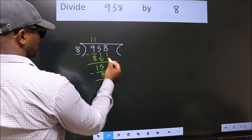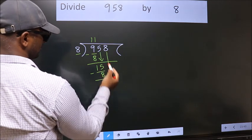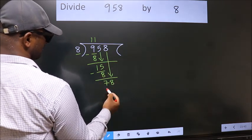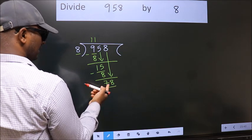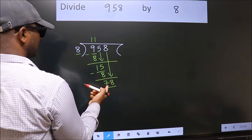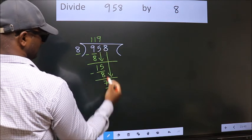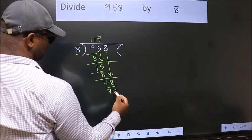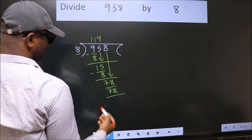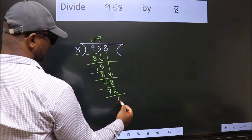After this bring down the beside number. So 8 down. So 78. A number close to 78 in 8 table is 8 nines 72. Now we subtract. We get 6.